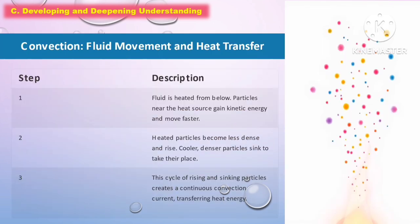The following are the steps of convection — fluid movement and heat transfer. First, fluid is heated from below: particles near the heat source gain kinetic energy and move faster. Second, heated particles become less dense and rise, while cooler, denser particles take their place. Third, this cycle of rising and sinking particles creates a continuous convection current, transferring heat energy.